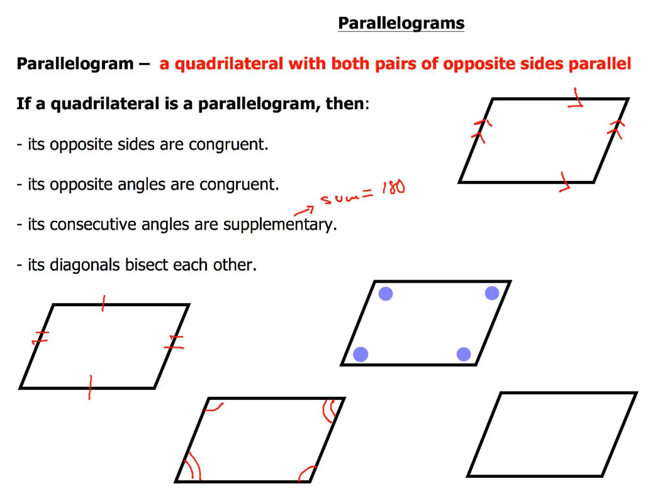Now my very last characteristic about parallelograms, the diagonals, they bisect each other. So that means if I go from here to the other side and here to the other side, where they meet, they're going to bisect each other. So that's going to chop each one of these in half. So we're going to use those four characteristics here momentarily.